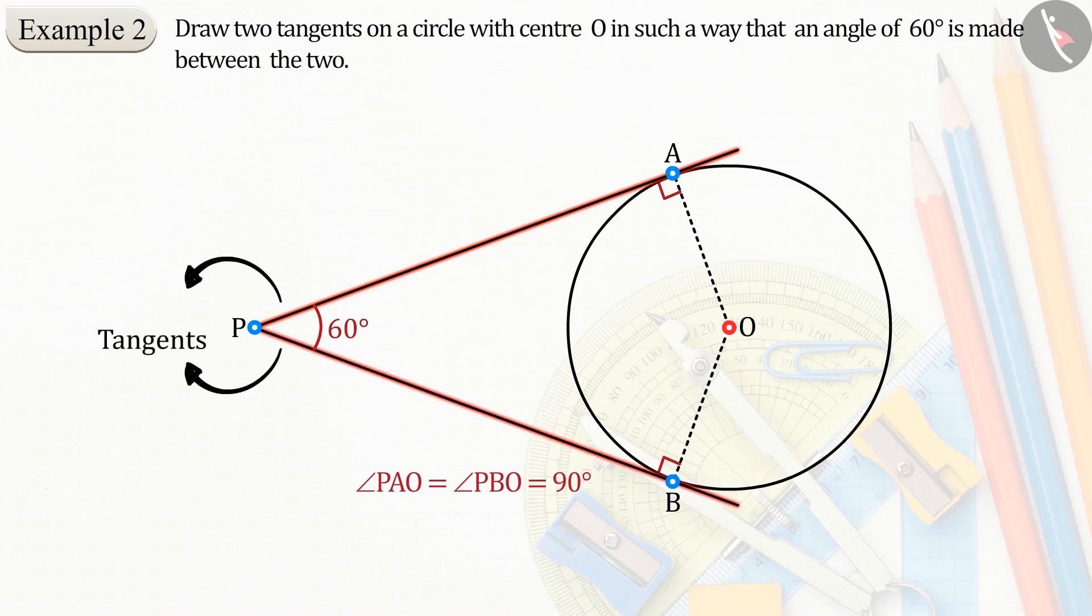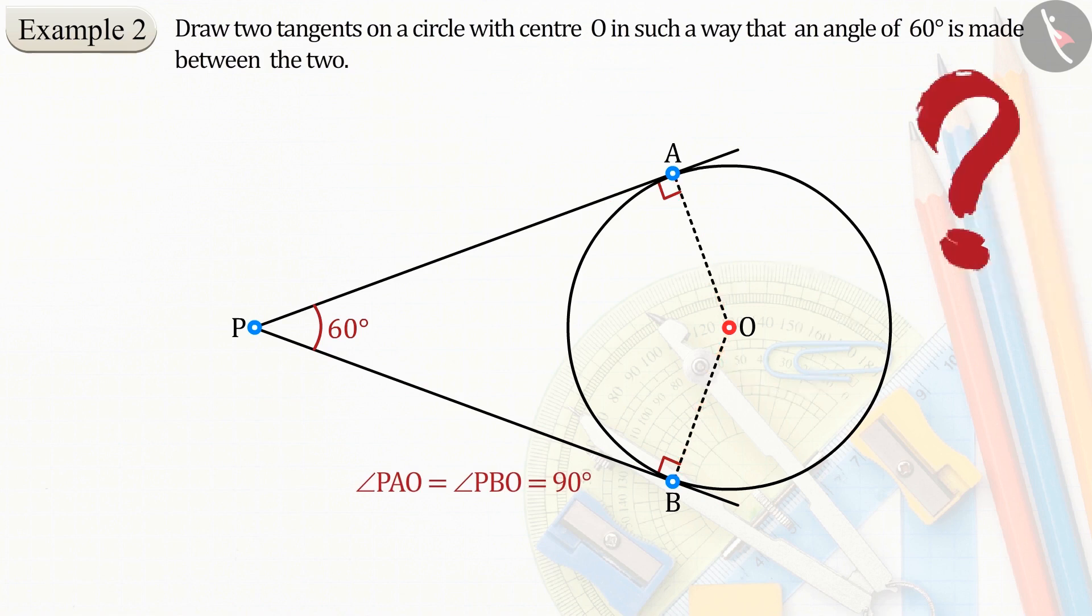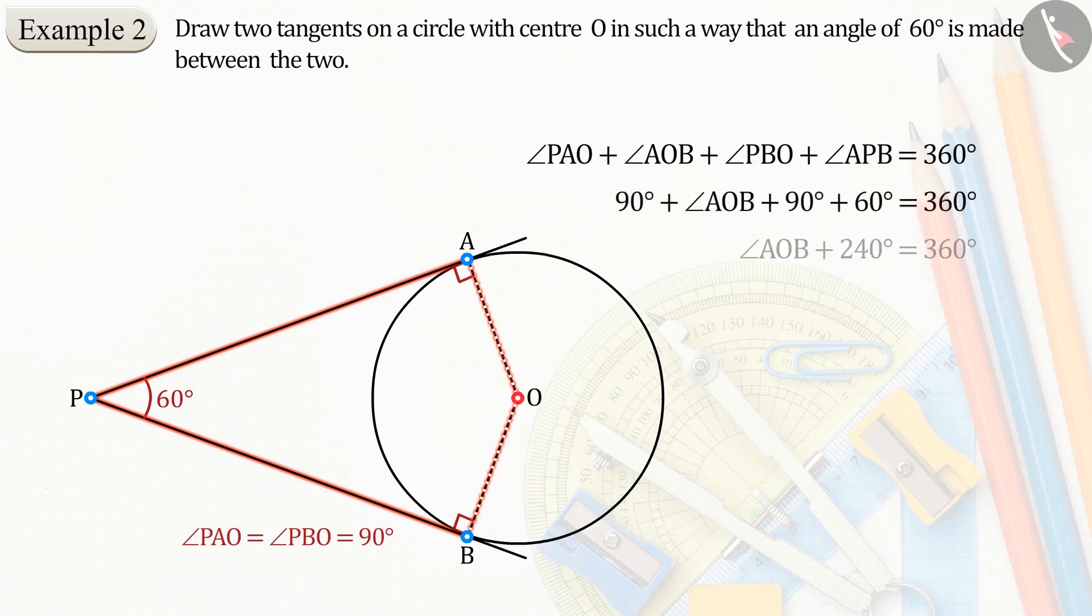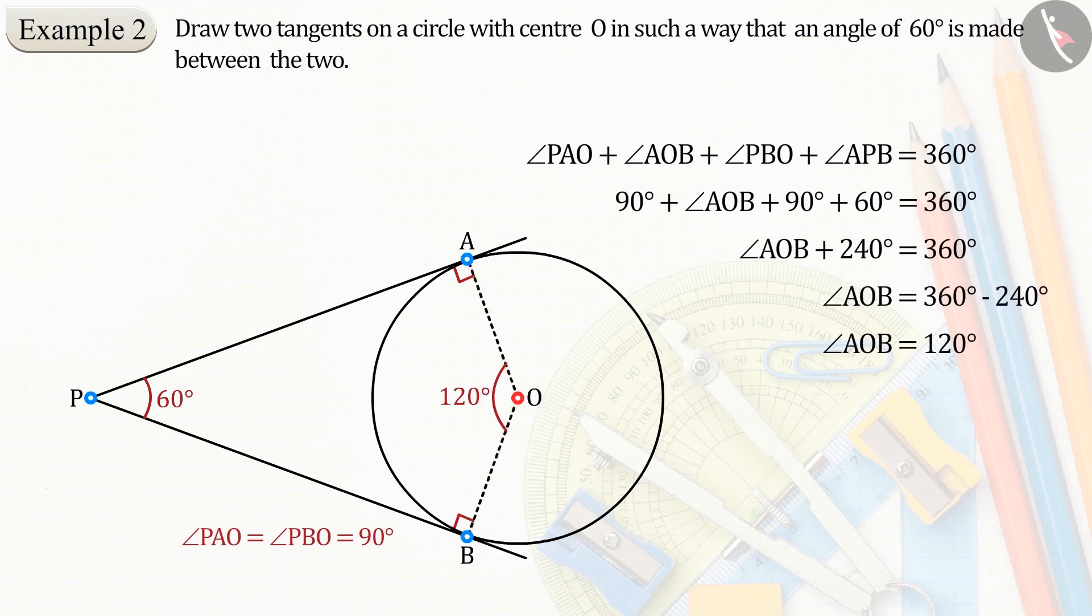Because PA and PB are tangent lines, and OA and OB are the radii of the circle. Can you tell the value of angle AOB? Absolutely right, the sum of the four angles of a quadrilateral is 360 degrees. Therefore, the value of angle AOB will be 120 degrees.